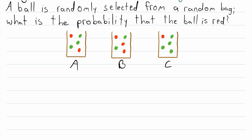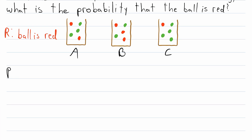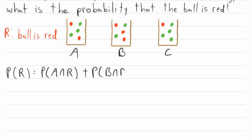But this problem is no match for the law of total probability. Our sample space has been partitioned into three sets: we're either going to select a ball from bag A, bag B, or bag C. So A, B, and C are the three events that partition our sample space. Let R be the event that the ball is red. Then the probability of R equals the probability that the ball is from bag A and red, plus the probability from bag B and red, plus the probability from bag C and red. Because the ball has to come from one of these three bags, adding these three probabilities gives the total probability that the ball is red.